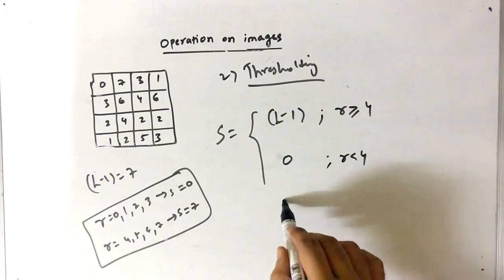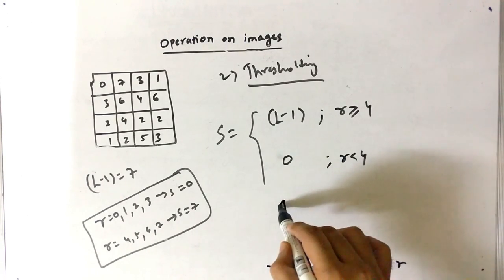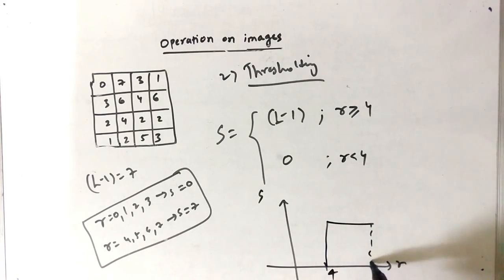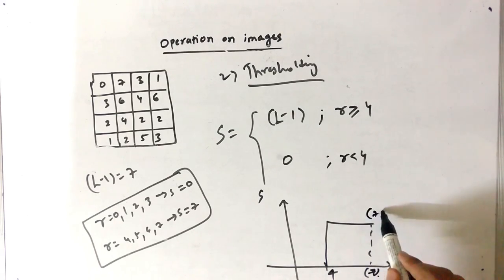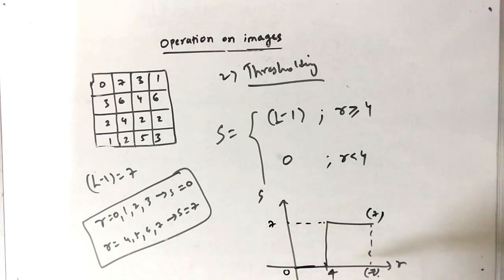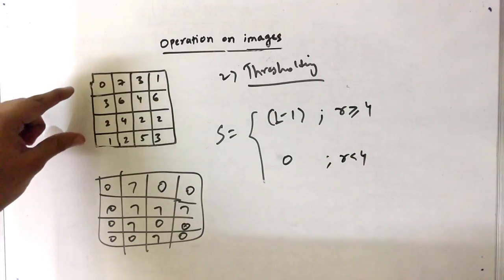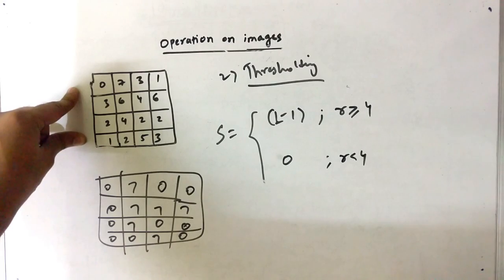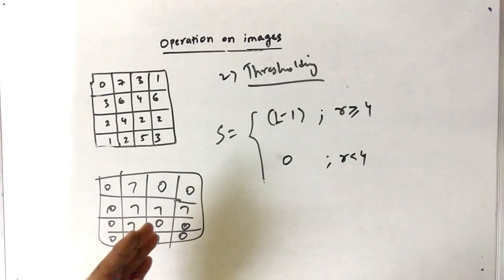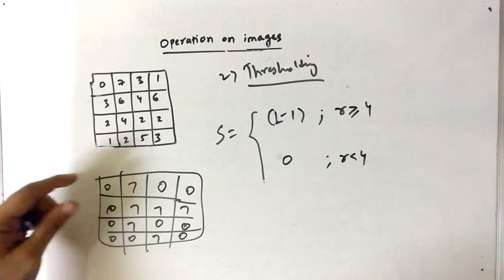The graph shows input R on one axis and output S on the other, with the threshold point at 4. Up to that point the output is 0; from 4 up to L minus 1 (which is 7) the output is 7. In the resulting image, wherever R is less than 4 it is replaced with 0, and wherever R is 4, 5, 6, or 7 it is replaced with 7.